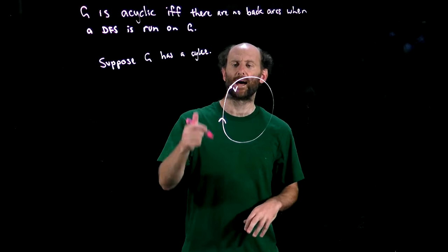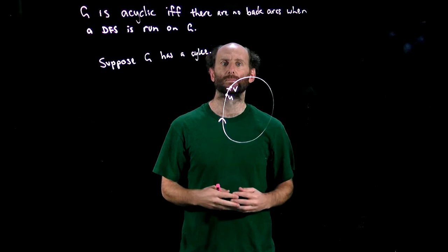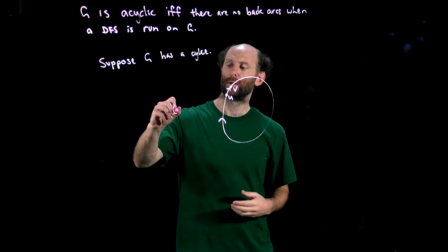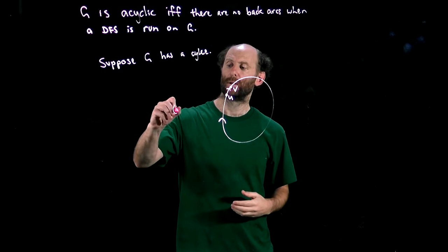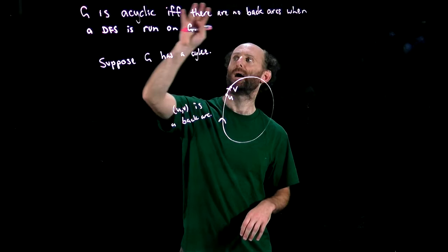Now when we get to the last node on that cycle, say u, we will at some point explore the arc uv that completes that cycle. This will be a back arc since v is an ancestor of u in the search tree. Hence uv is a back arc, so that shows that if G is acyclic there are no back arcs, and if there are no back arcs then G is acyclic as needed.